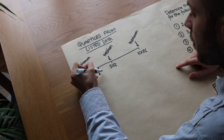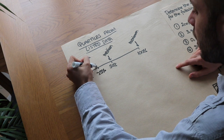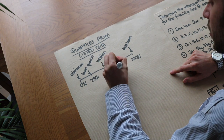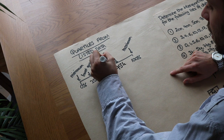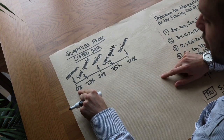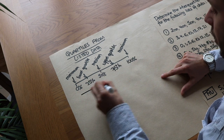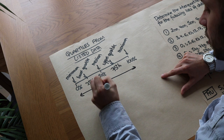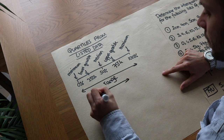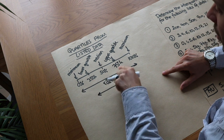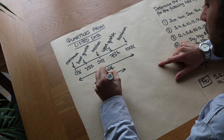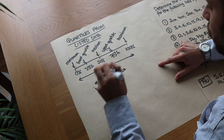But we can also have 25% along the data, and we call that the lower quartile. And we can also have 75% along the data, and that is unsurprisingly known as the upper quartile.